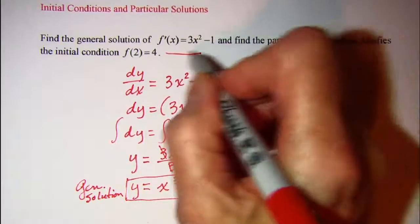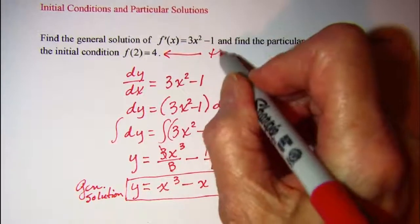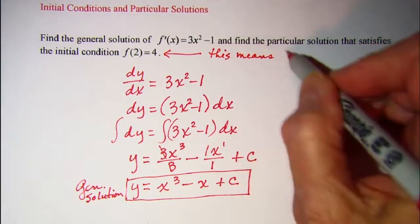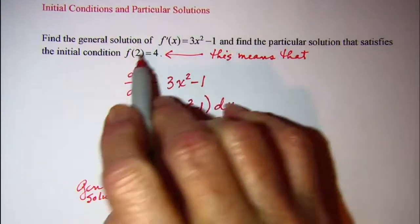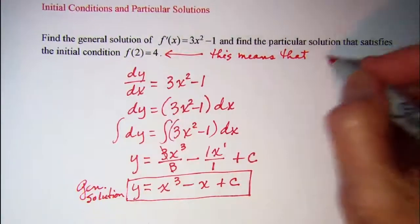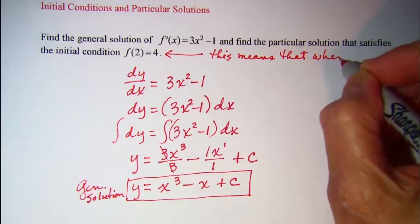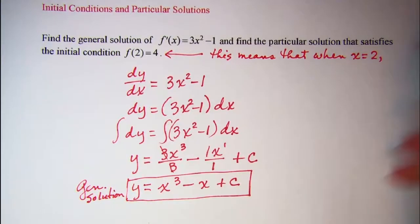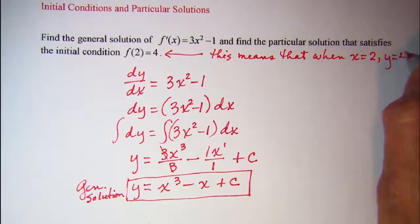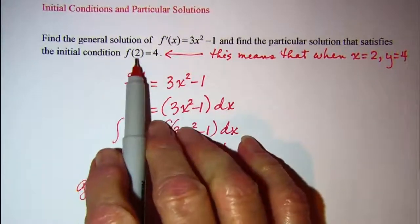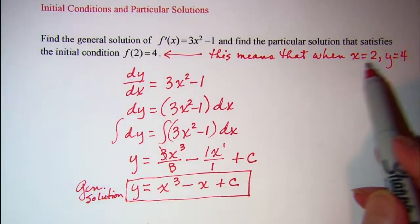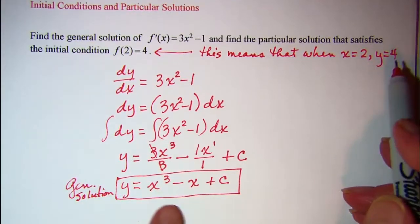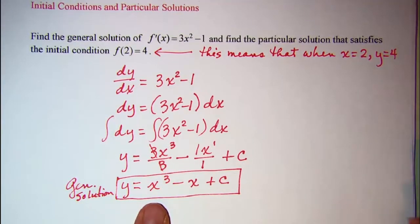This means that when x is 2, y equals 4, because remember f(x) is the same as y. So when x is 2, y is 4, we're going to use these values in our general solution to find the value of c.